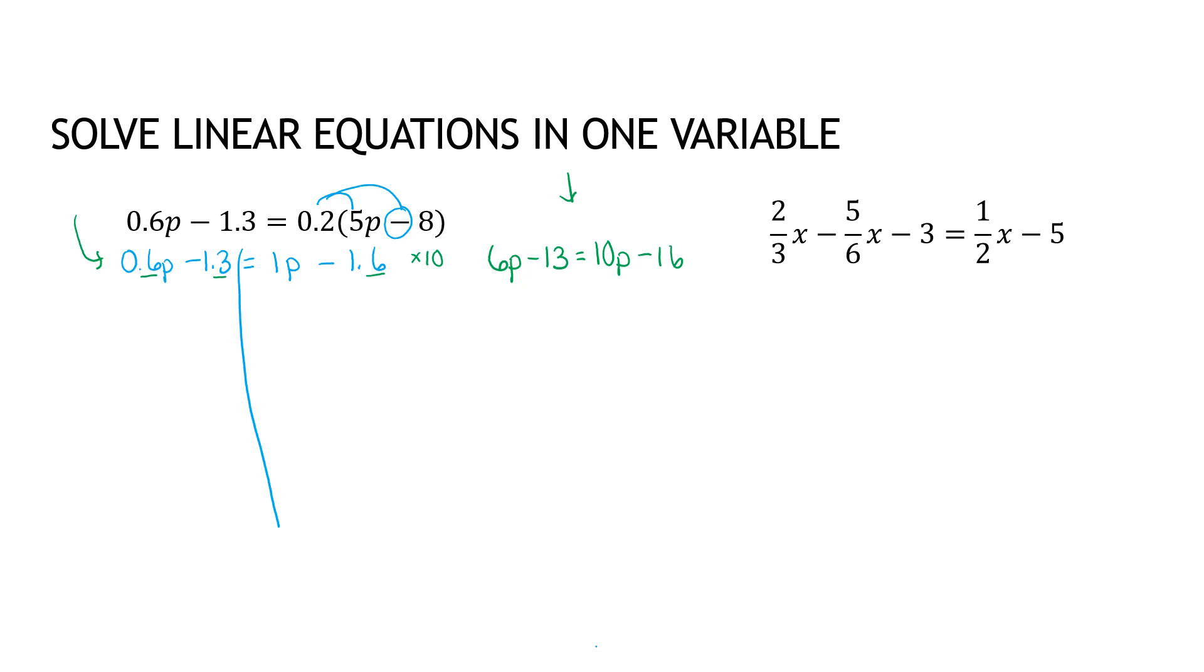Let's do it with decimals. The first thing I would do is get all of the p's to one side, which is what we always like to do, minus 1p. That gives me negative 0.4p minus 1.3 equals negative 1.6. I add 1.3 to each side to get negative 0.4p and negative 0.3. I divide each side by negative 0.4, and I get p equals 3 fourths or 0.75. That worked just fine.